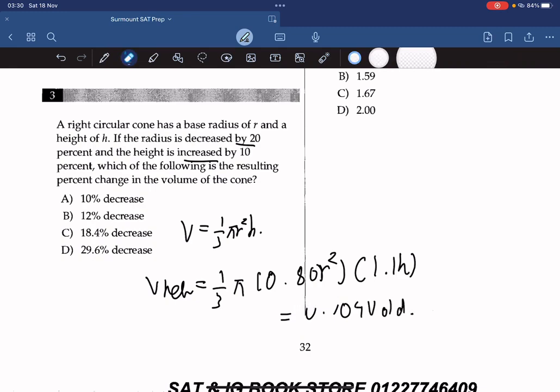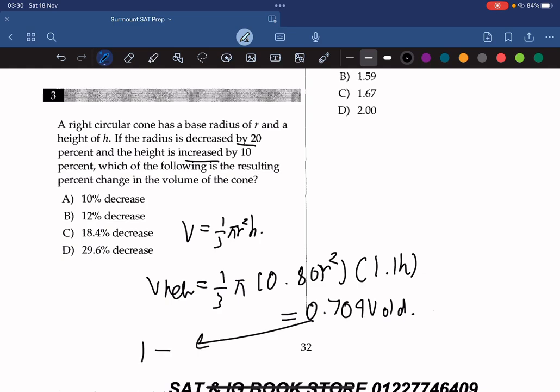Now we got this equation. So what we must do is subtract it by 1. So if we subtract 1 by 0.704, we'll be roughly given 29.6. So the answer is D.